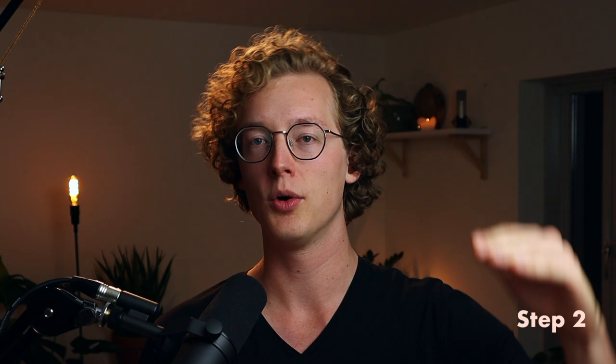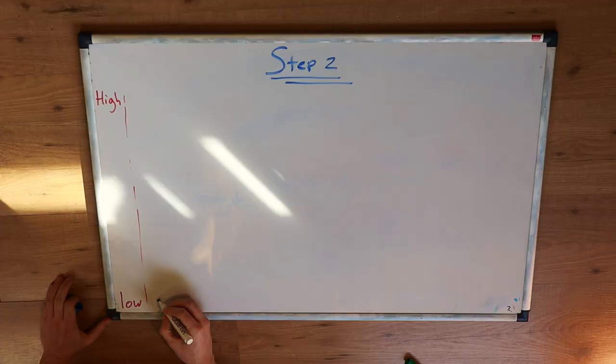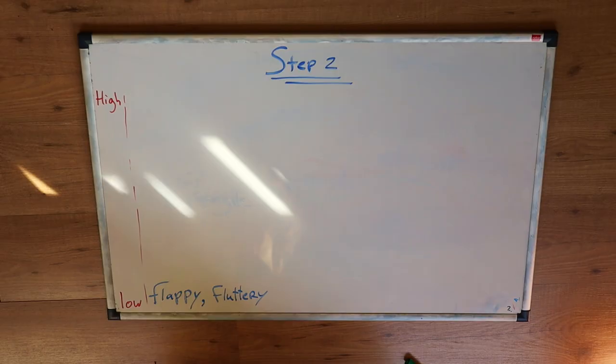So now that we have written down a list of associations, we're going to rank them from low to high. Where low means low emotional value or low story significance, and high means high emotional value or high story significance. So in the case of our butterfly friend, I'm going to say flappy, fluttery, jittering through the air — that doesn't hold a lot of emotional weight to me, nor is it very important to the story. It's a trait of a butterfly, but that's kind of it. So I'm putting that at the bottom of our list.